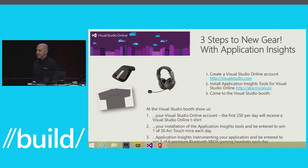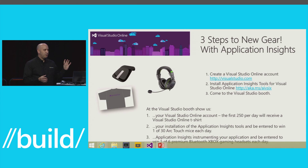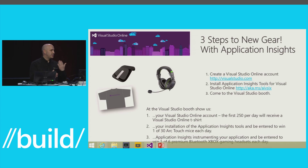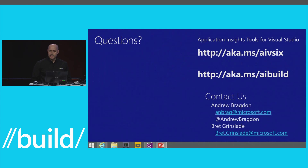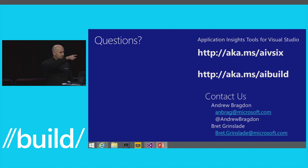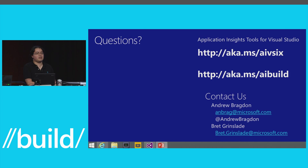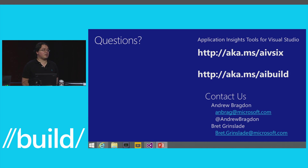Application Insights is still in preview but is currently available to all of you through Visual Studio Online. It's built to scale to your application whatever it might be. To try it out: go to aka.ms/AI VSIX — it's a less than 2 megabyte download, super easy. You don't need Visual Studio Online or Application Insights experience to get started, just a Windows Live ID. If you go to the booth upstairs on the third floor, you can be entered in a drawing for a mouse or Bluetooth headphones for an Xbox.